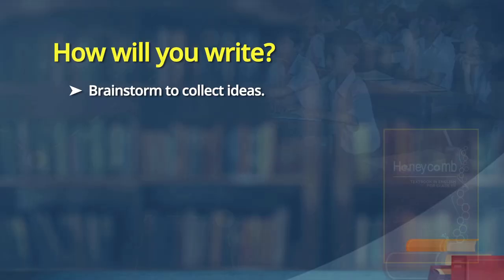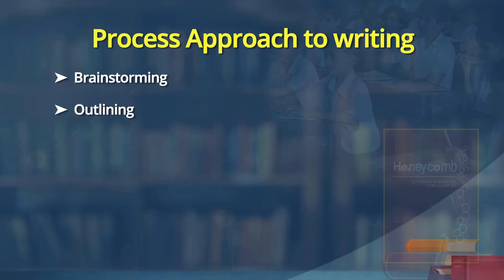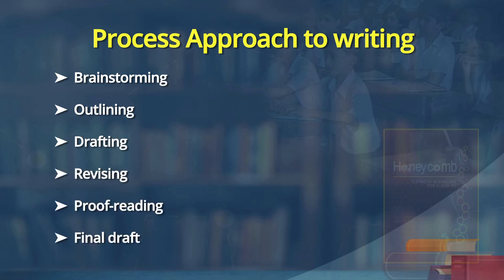Learners, we have now learned to write. A good writer follows a process — you brainstorm your ideas, jot down the points, make an outline, then write the first draft, then edit and finalize it. The table again appears on the screen: brainstorming, outlining, drafting, revising, proofreading, and final draft. This is how a write-up is made.